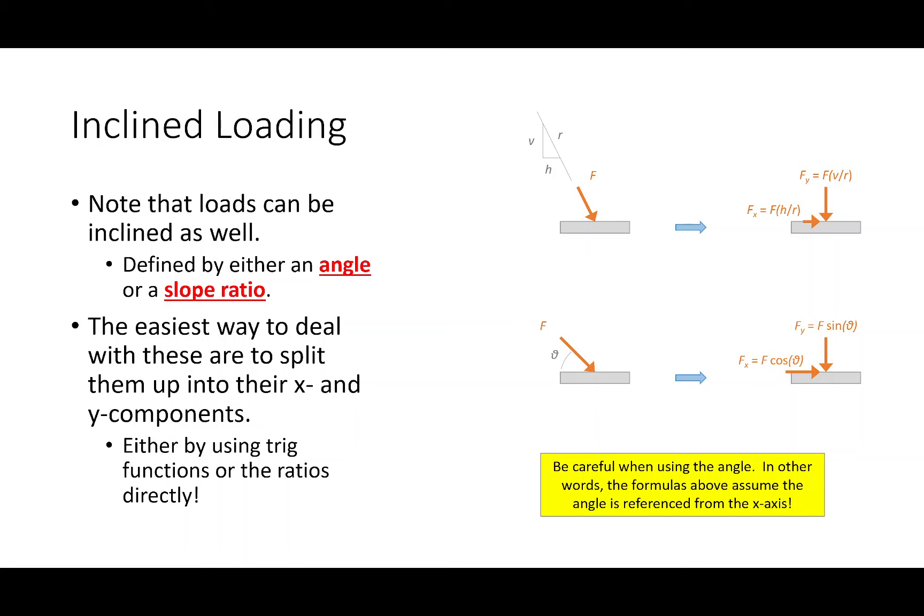The first is the pure math way: specifying an angle and then taking sines and cosines. But the other is just looking at the slope ratio — the rise over run — which in most civil engineering applications is the most common. For example, if you're looking at a roof, very rarely will you say it's at 27.2 degrees. Instead you'll say three on twelve. Being able to take a rise-over-run slope ratio and convert it into X and Y components for a load is more useful.